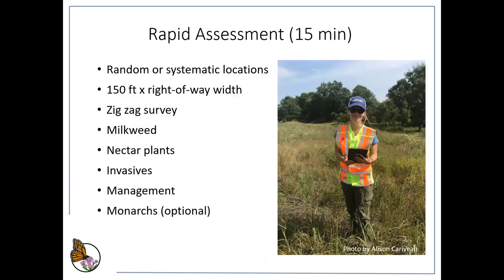For the field component of a rapid assessment, surveys are done at locations that are either random or systematically located in the road system — every mile, half mile, or quarter mile depending on the sample area size. Each sample is 150 feet: you walk from where you park your truck 100 feet forward, then walk back to the back of the right of way to get the width. A surveyor then zigzags back through that area looking for milkweed, assessing nectar plants, looking for invasive plants, and noting management. There's also an optional ability to record monarchs — adults, eggs, and larvae.